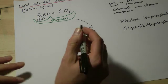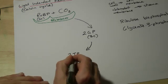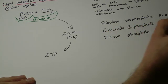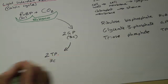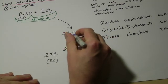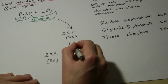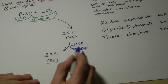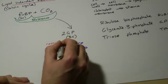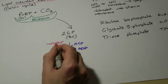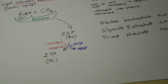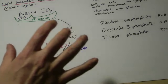GP is then used to create triose phosphate, or TP, which is another three-carbon compound. To convert GP to TP, you have to phosphorylate it — ATP goes to ADP, with the phosphate group added to GP — and we also need to reduce it, remembering that in this part of the cycle it is reduced NADP that is present. So glycerate phosphate has been reduced and phosphorylated. Where do the ATP and the reduced NADP come from? They come from the light-dependent reaction.